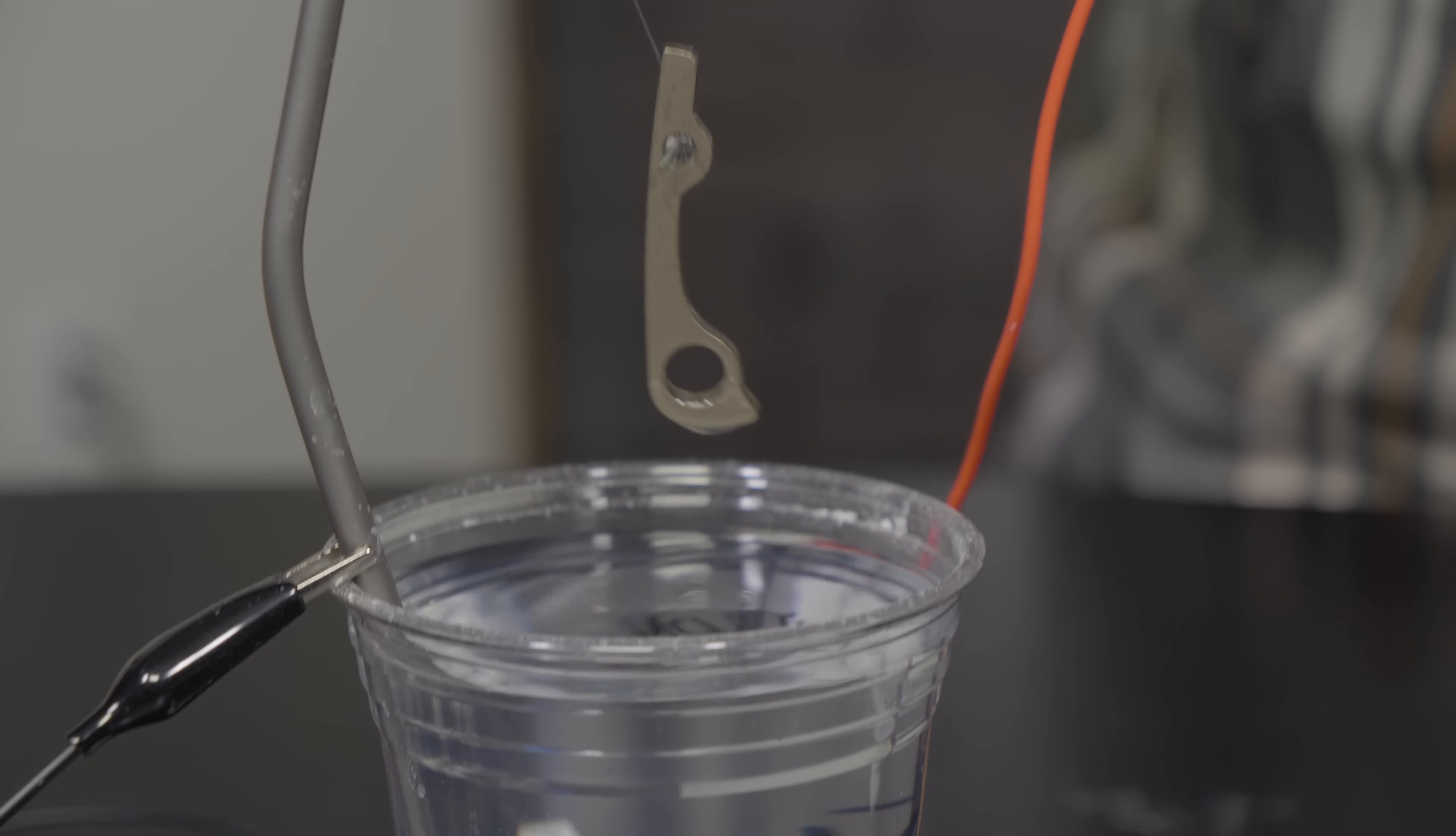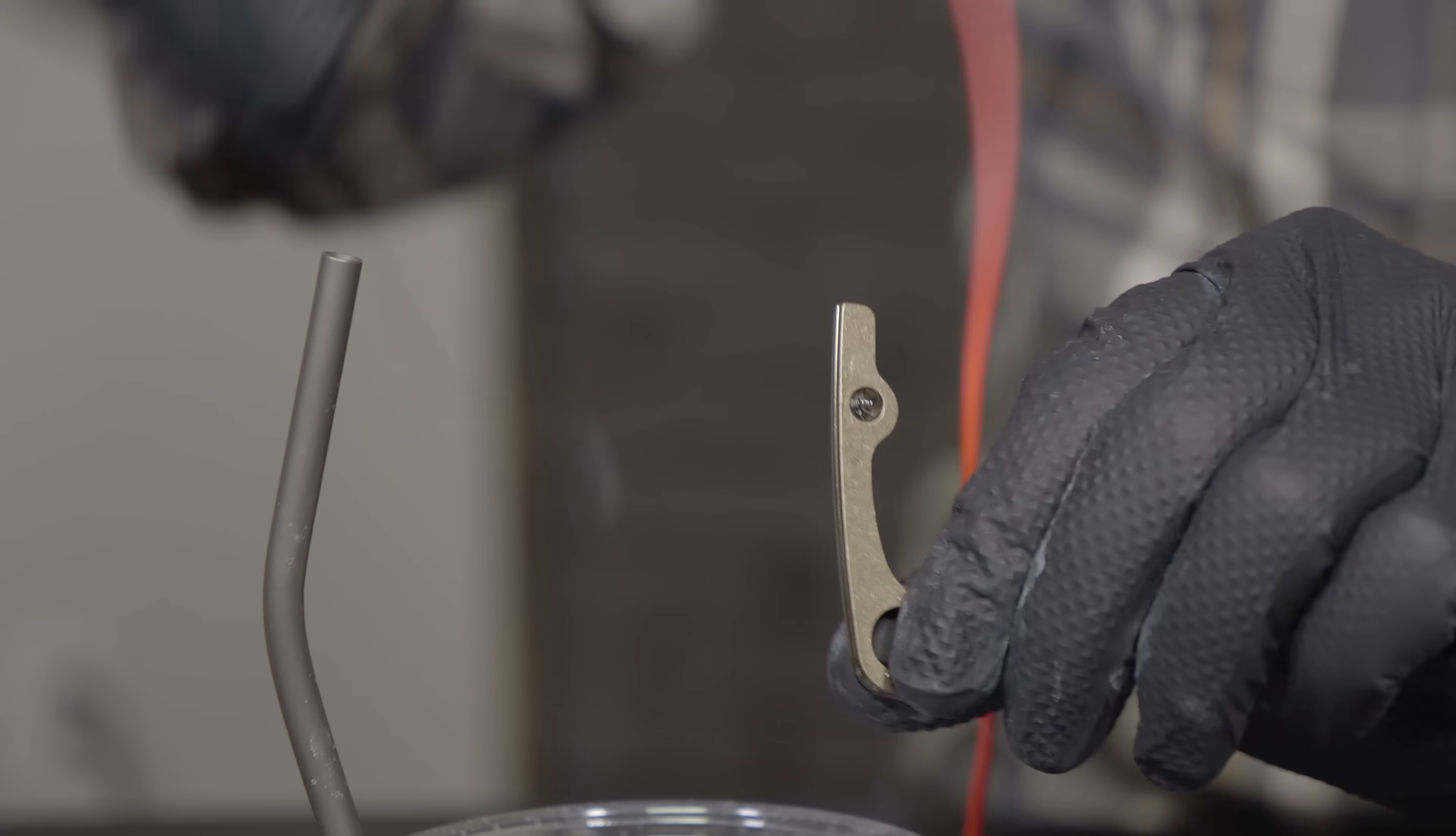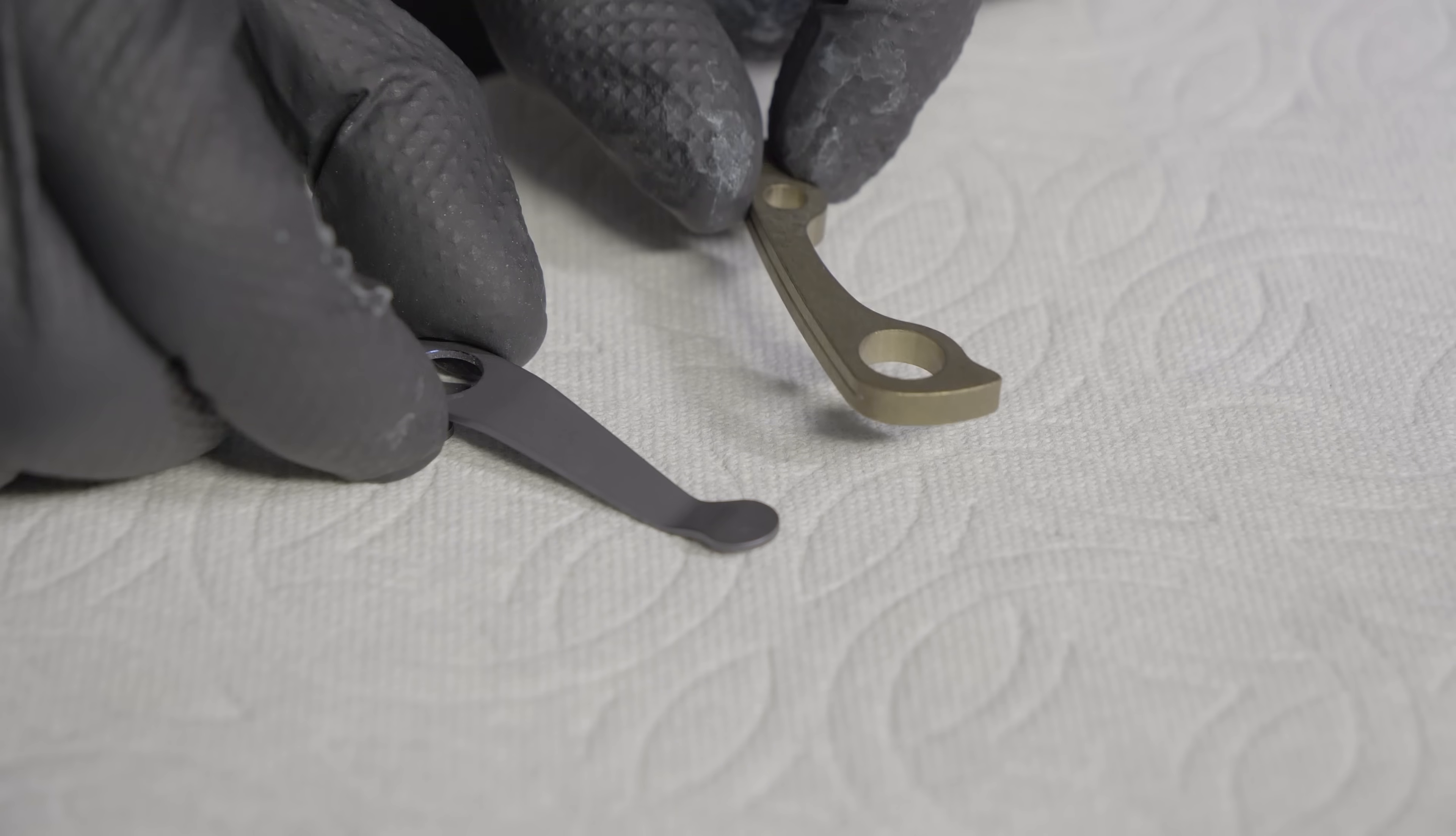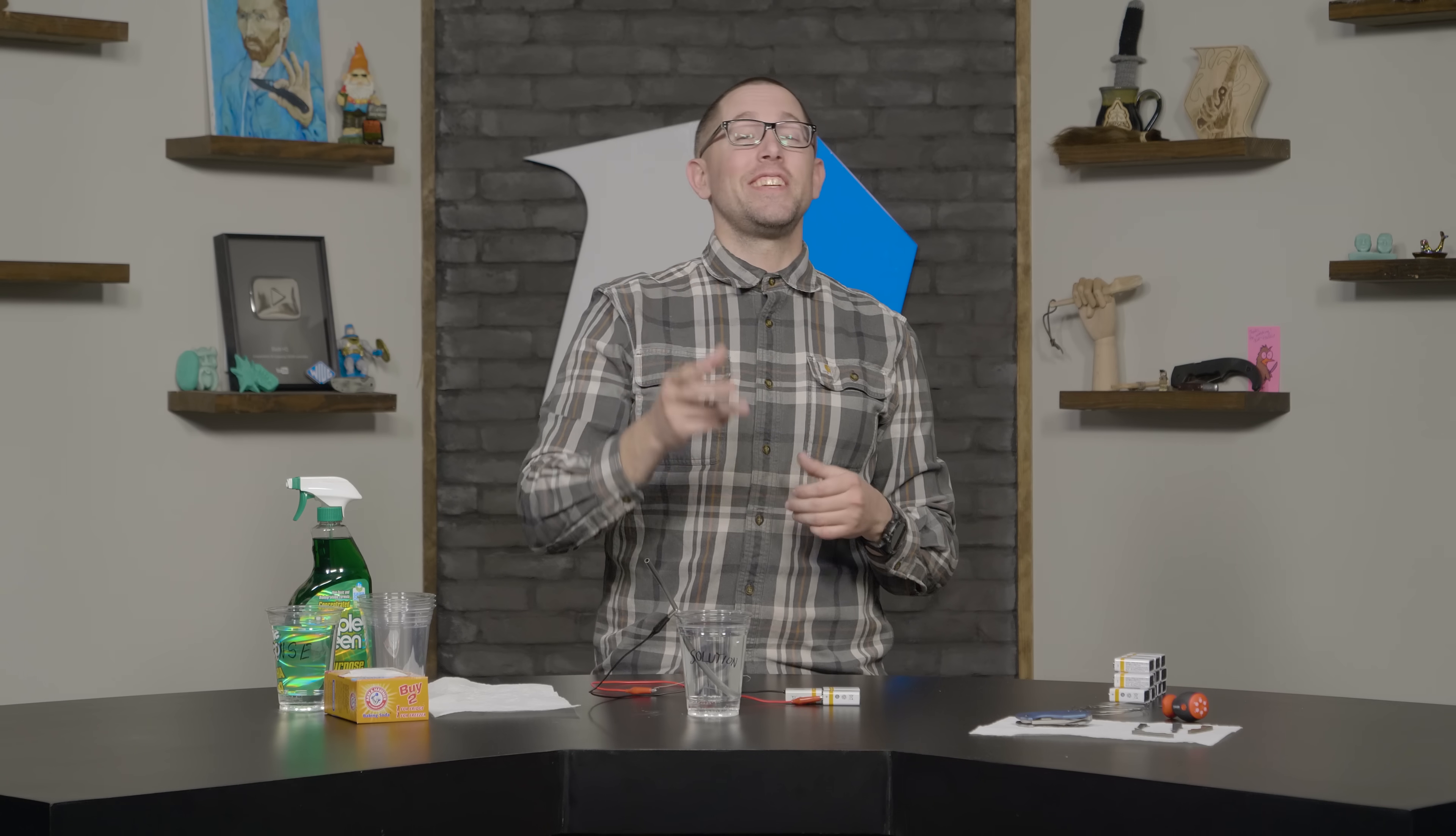We have tons of different titanium accessories on the website that you can dress up your current knife, such as pocket clips, backspacers, etc. And just as a reminder, depending on how well you clean your titanium piece, what type of coating it had on it when you got it, and what solution you use, your colors may vary. And it really is that easy to anodize titanium at home.